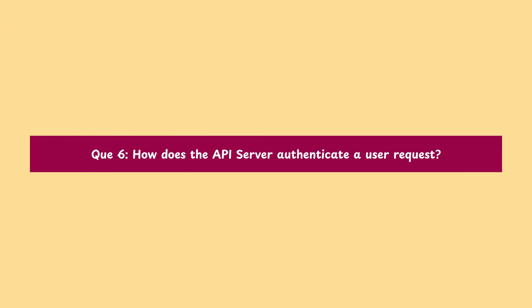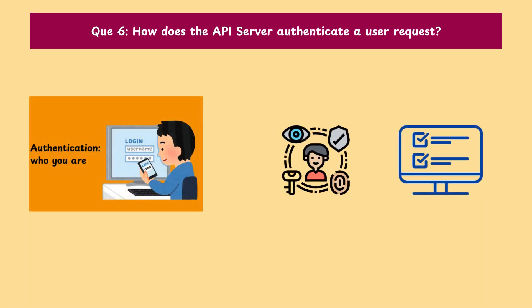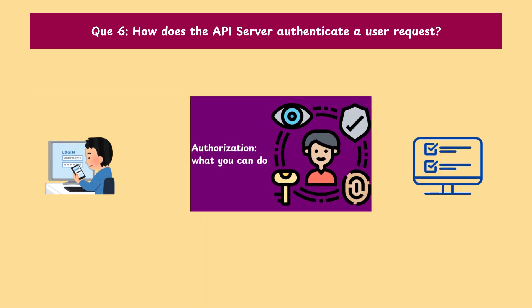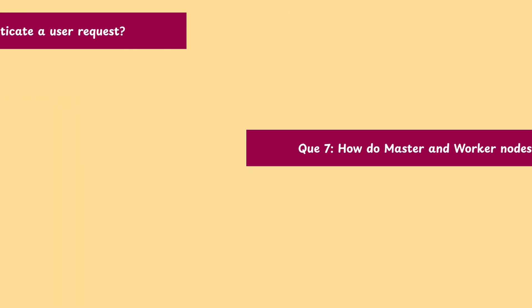Question 6: How does the API server authenticate a user request? The API server checks authentication — who you are — then authorization — what you can do — and then admission controllers, before accepting the request.